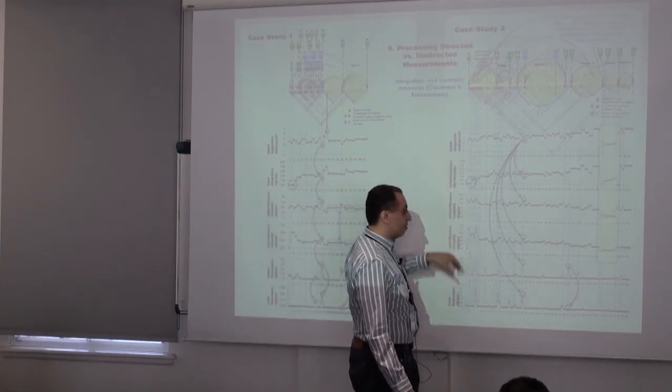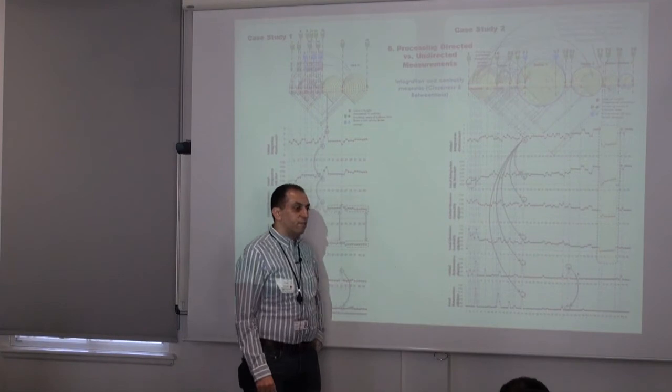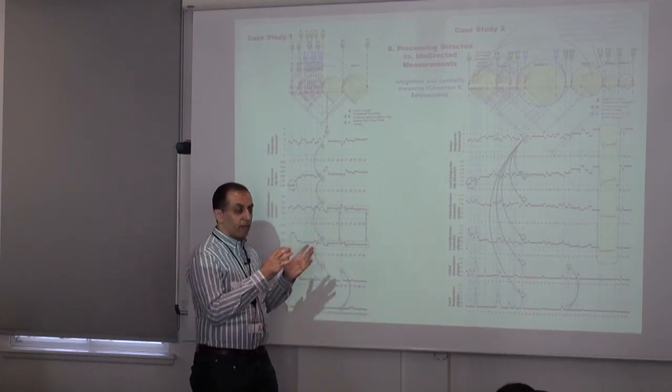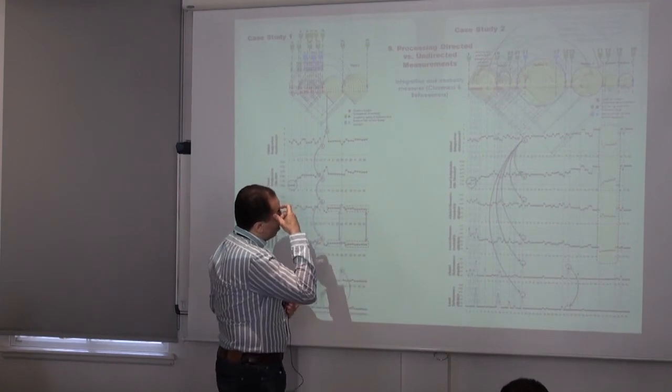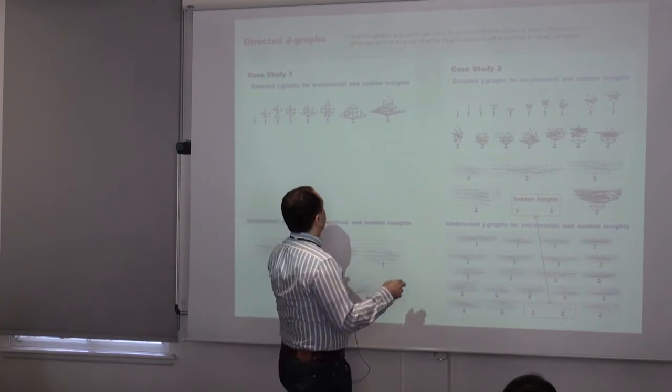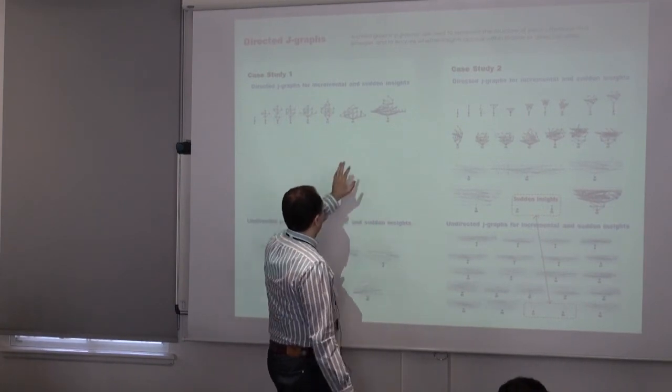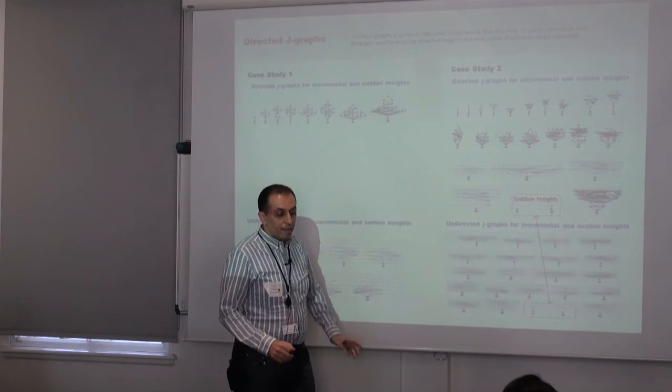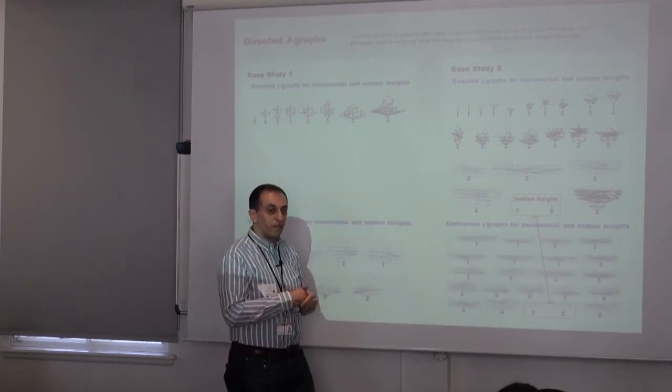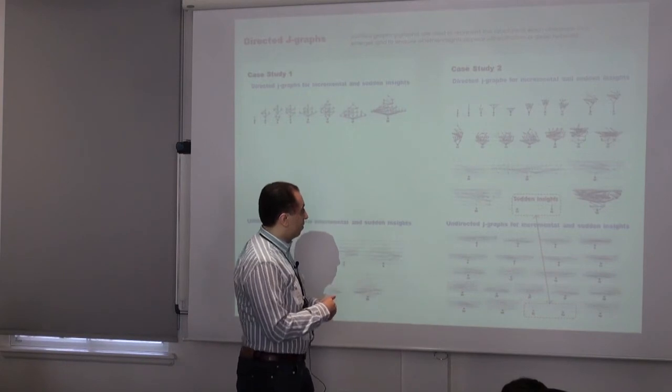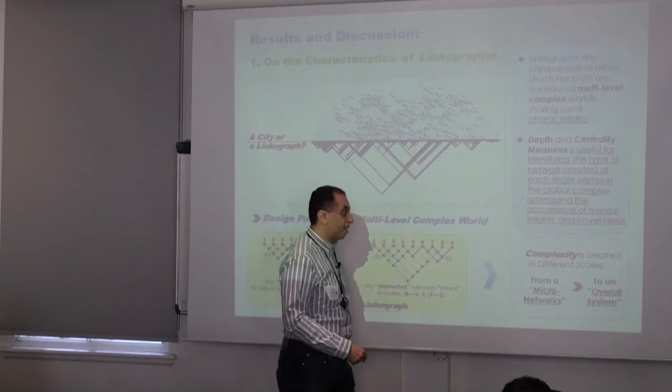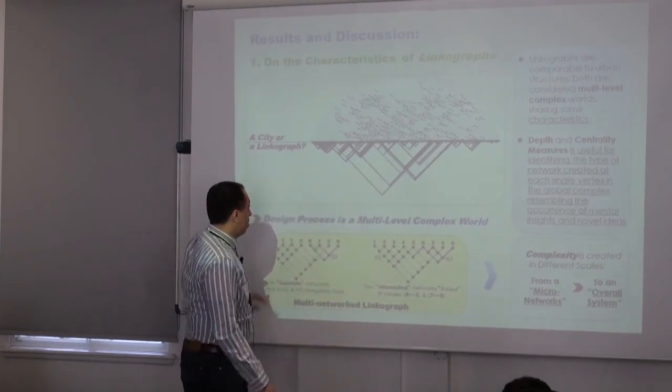We can measure this using different sets of depth measurements and syntactical network analysis and information measurements. We overlap all of them in one model. Now we are producing something called J-graph. J-graph is the relations between insights classified to steps of relations—we have direct versus indirect. We can find that sudden insights can be highlighted in this quantitative way.